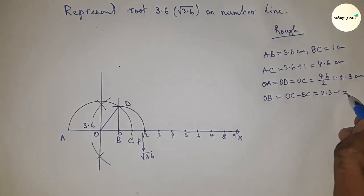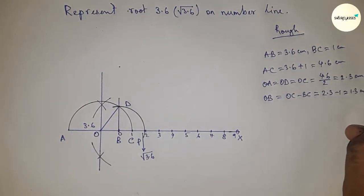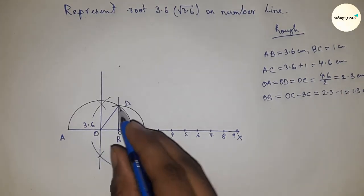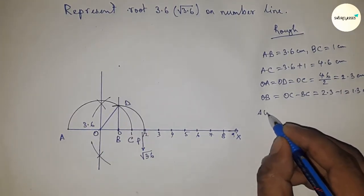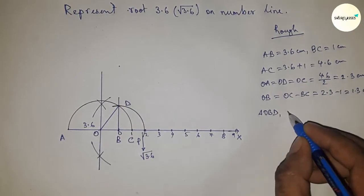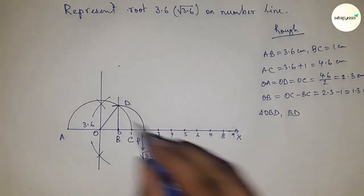From the right-angle triangle OBD, we can write BD equals, by Pythagorean theorem, the square root of OD squared minus OB squared.